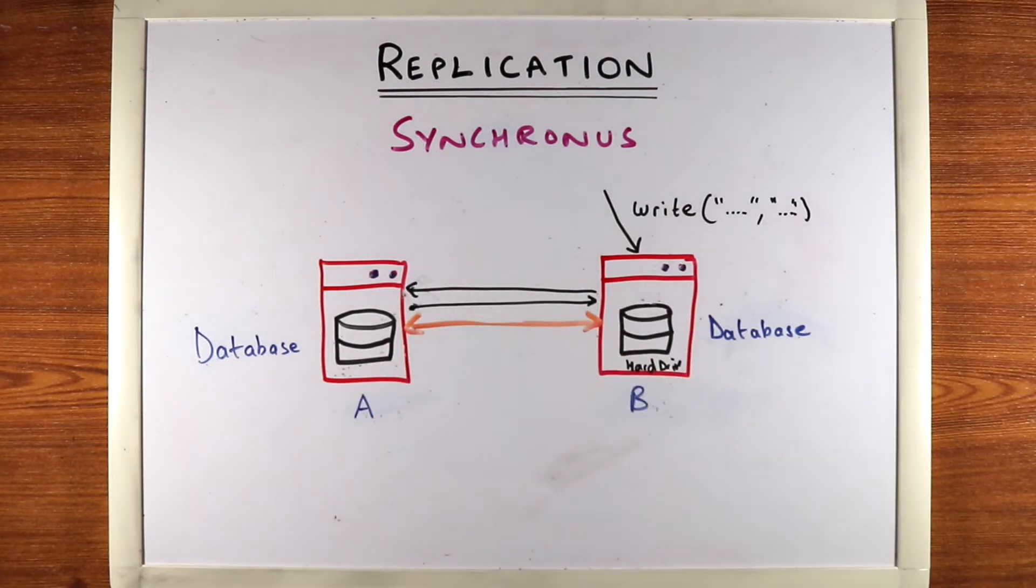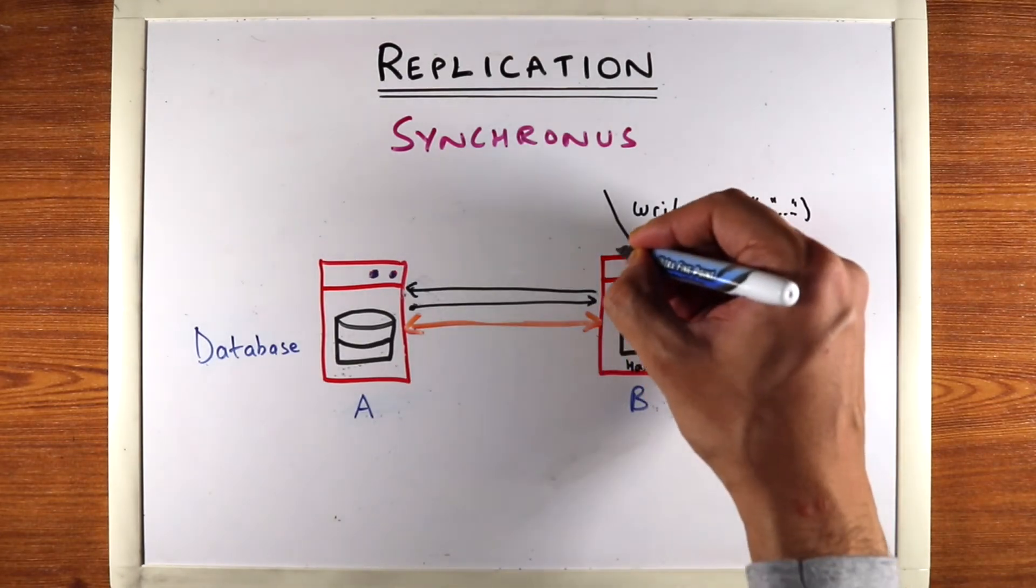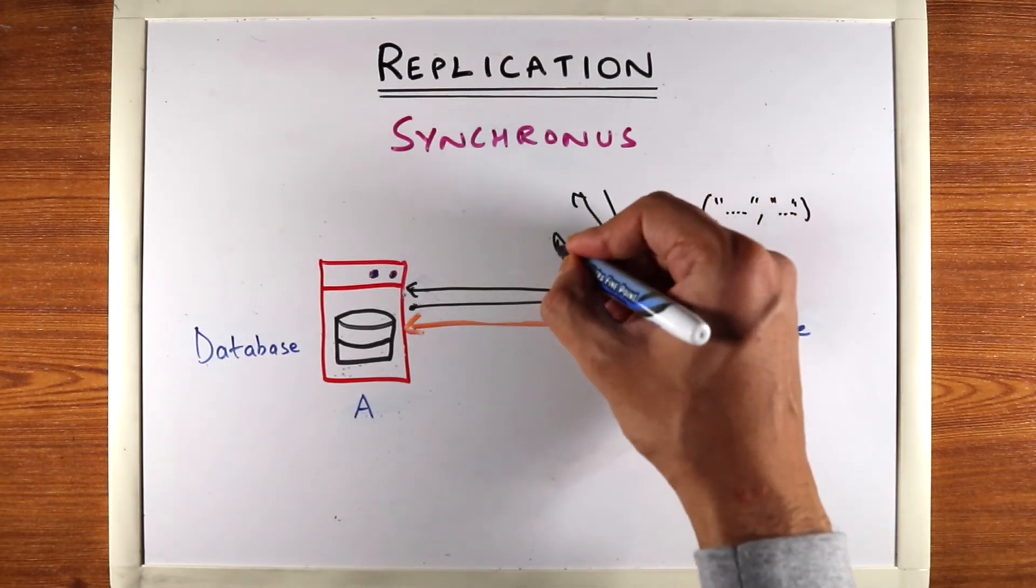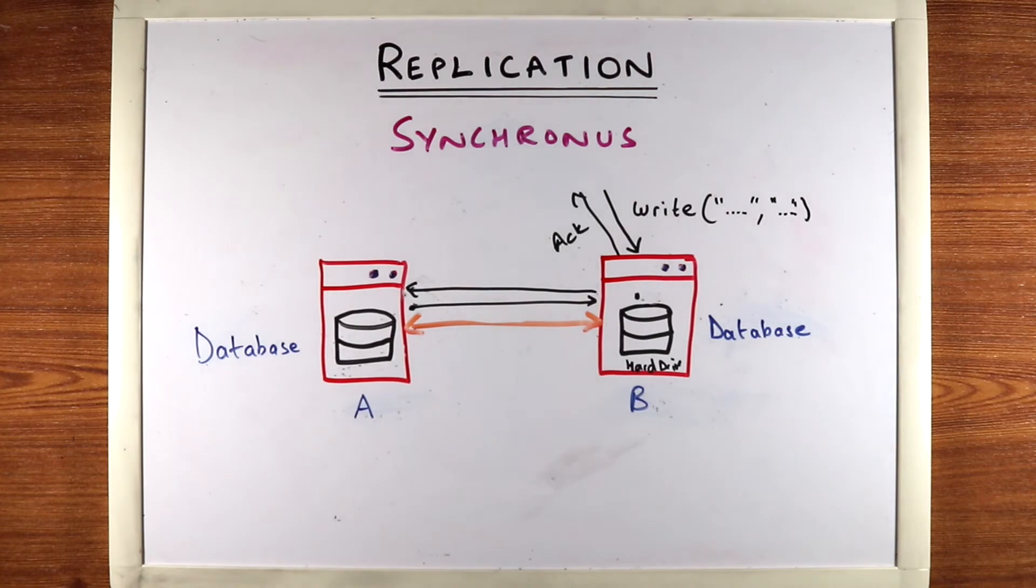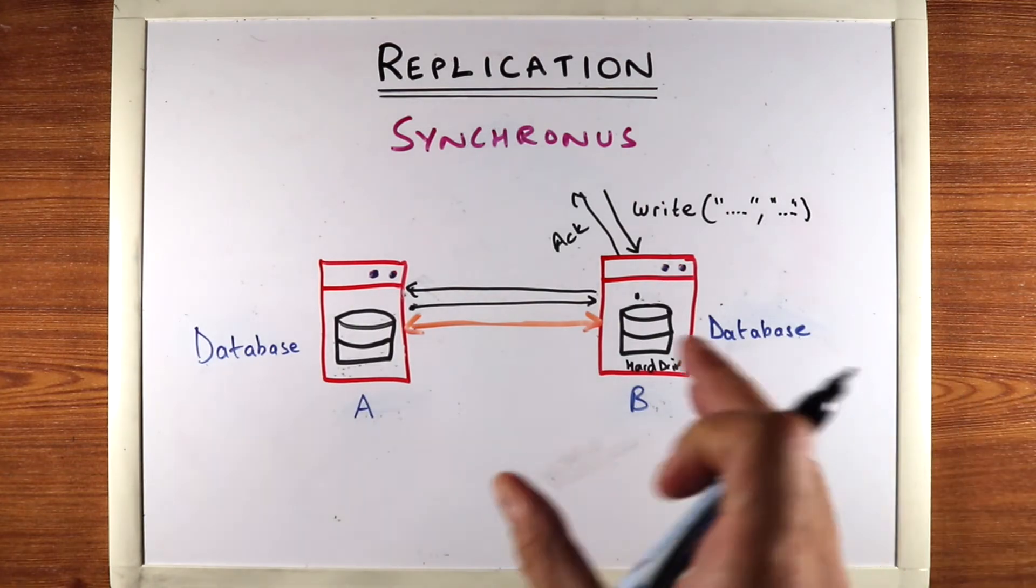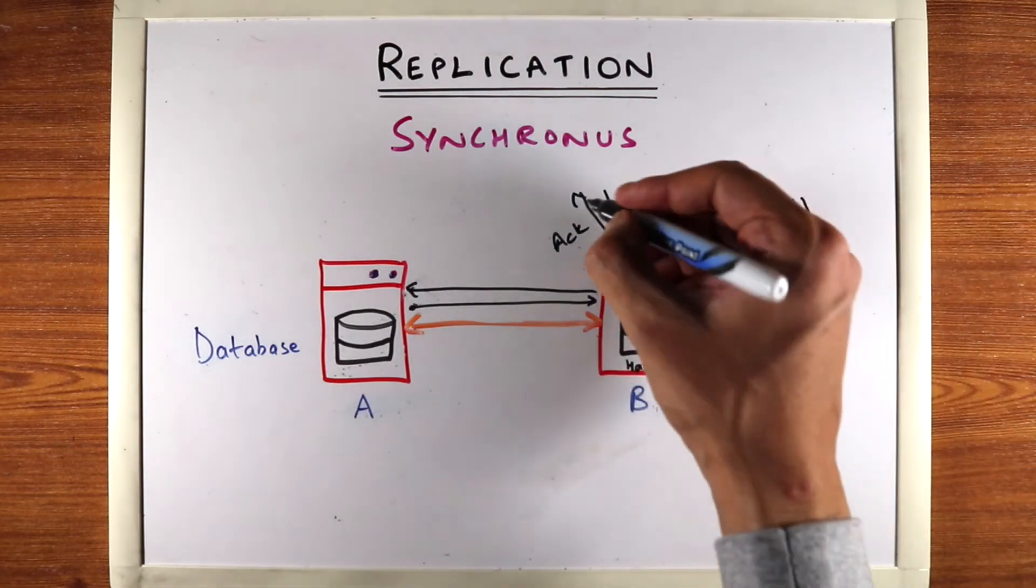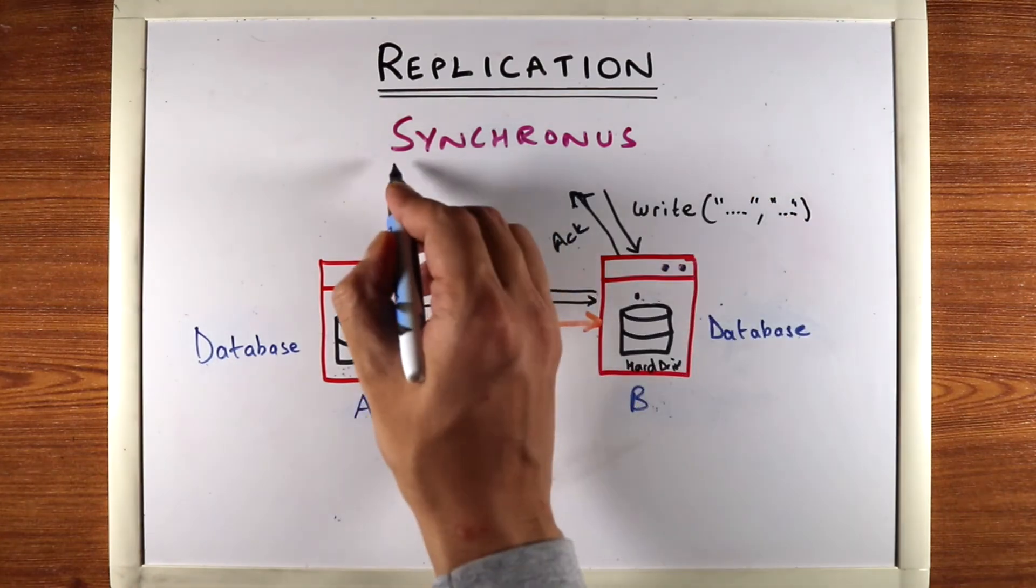Once database A is done writing, only then will the database return back an acknowledgement saying that this write was written. It's only when data is committed on both these machines does the write succeed. Hence the name synchronous.